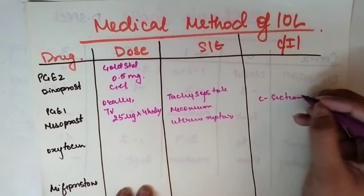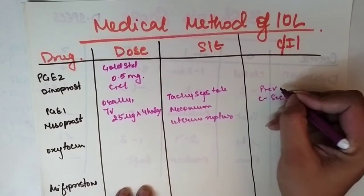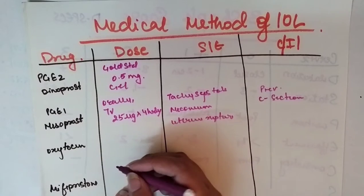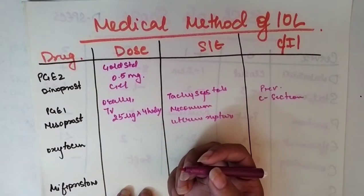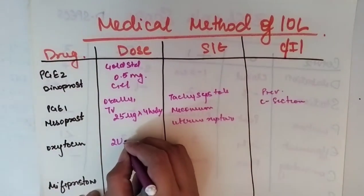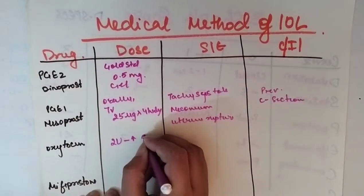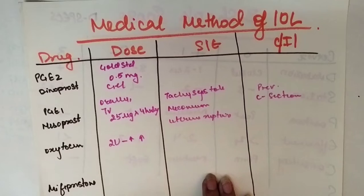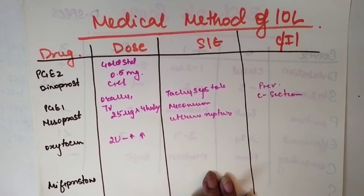Oxytocin is used usually in increasing dose. We will start from 2 units and we keep on increasing the dose with time. In hospitals, usually oxytocin is given in drip during the labor also.